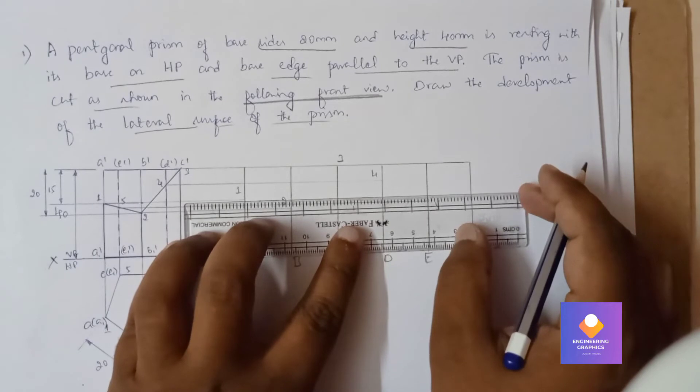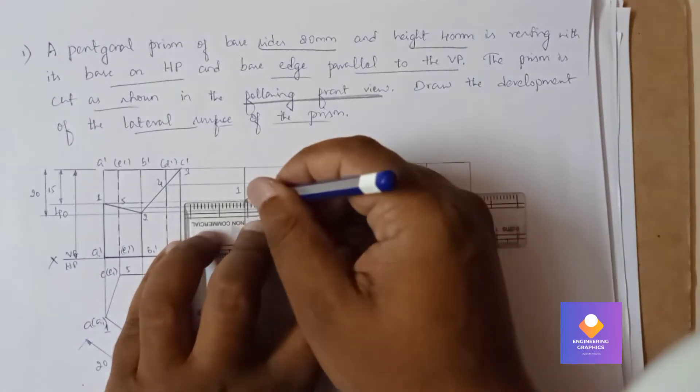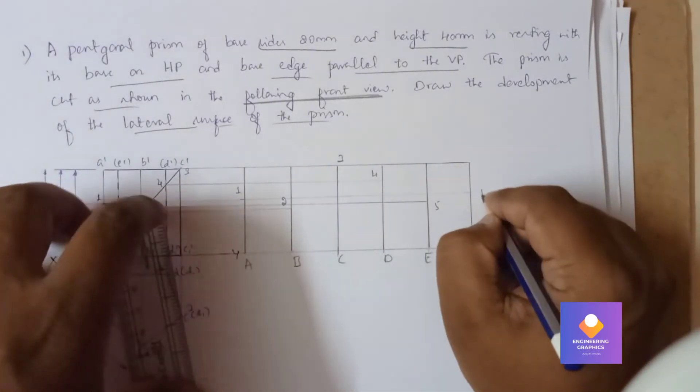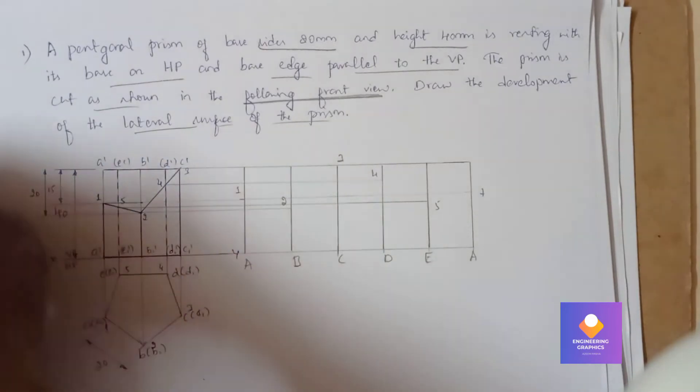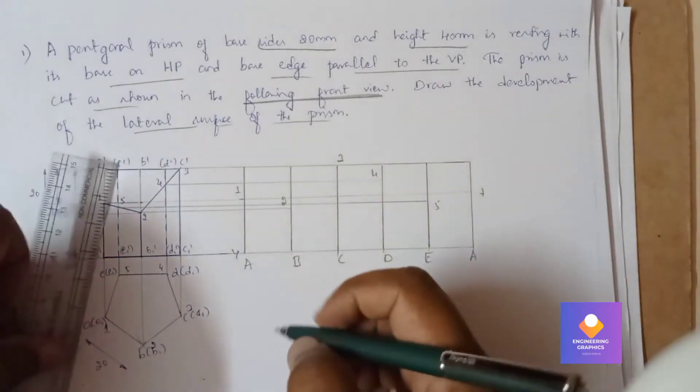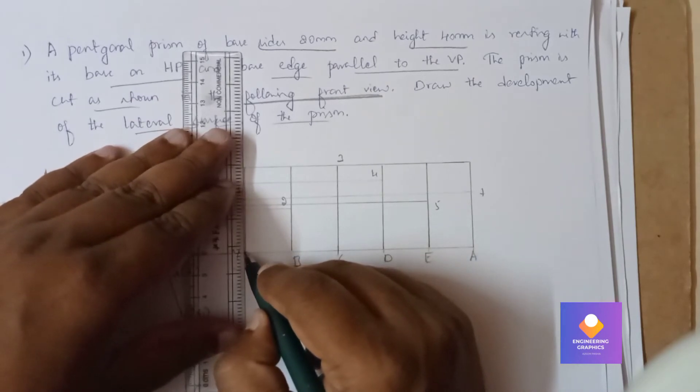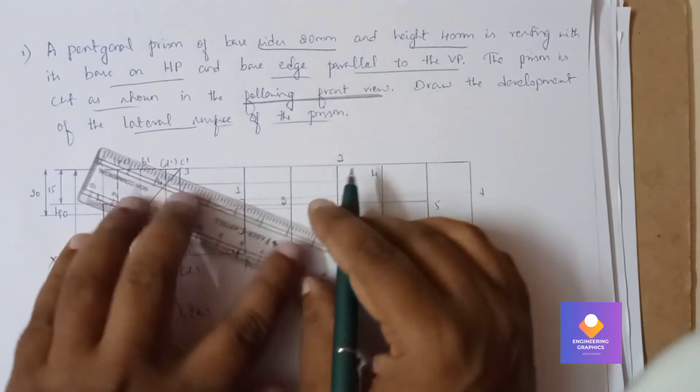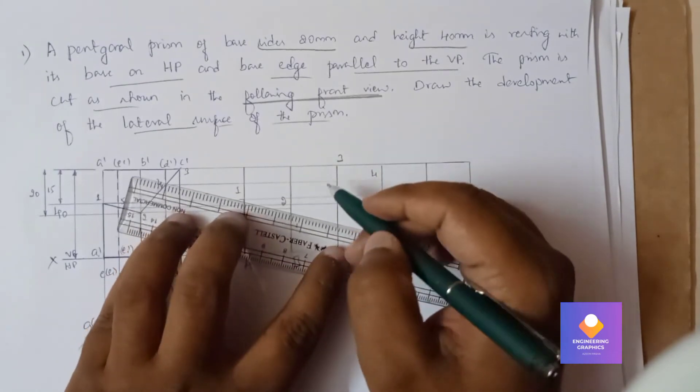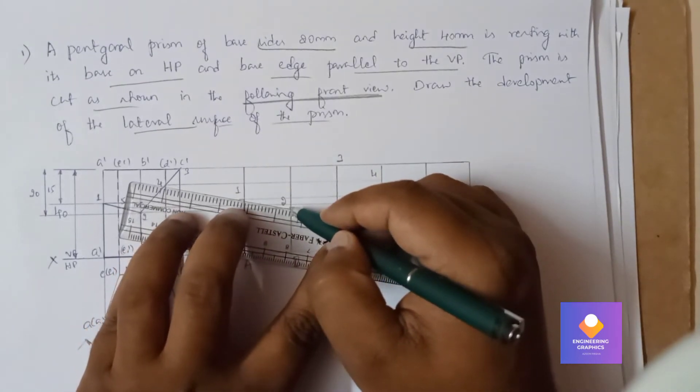Then point number one again I will have to show it on line A. Now we will be joining with a thick line. We need to join from 1 to 2 with the help of a scale using straight lines.